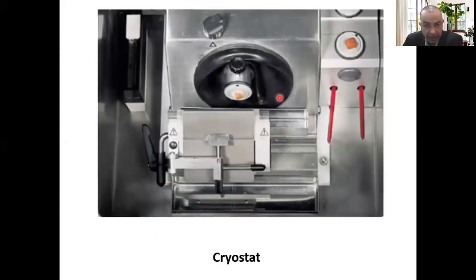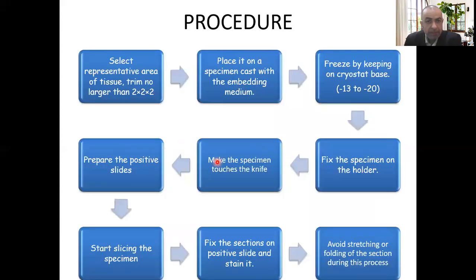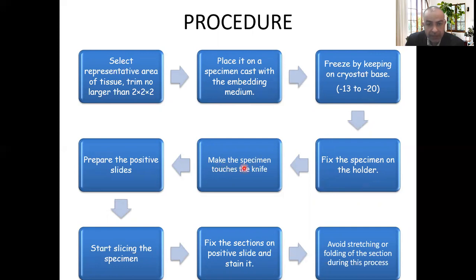This is the cryostat viewed from above — a photo taken during work. The procedure: select the representative area of the tissue. Trim to no larger than 2×2×2 mm. Place it on the specimen cast with the embedding medium FSC 22. Freeze by keeping on the cryostat at minus 13 to minus 20. Fix the specimen on the holder, and make the specimen touch the knife. Prepare positive slides — this prevents slipping and rolling. Start slicing the specimen and fix the sections on the positive slide.